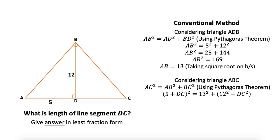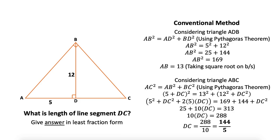Substituting that in this, I can find the value of DC, which came out to be 288 by 10. And the question asks for least fraction form, that's why DC = 144 over 5. This is the first method and a bit lengthy method.